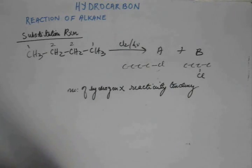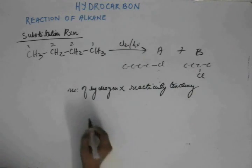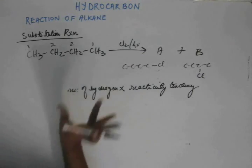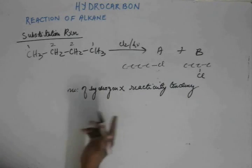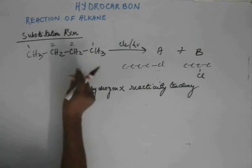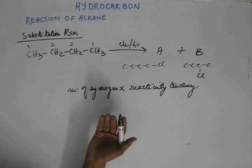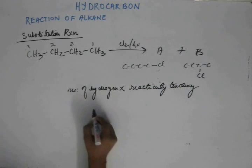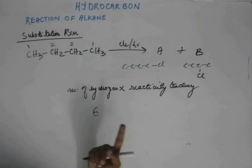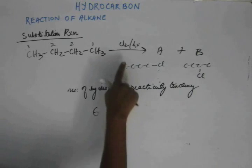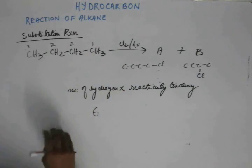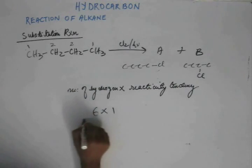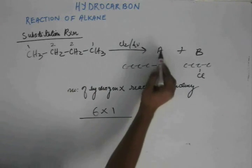And in order to find the ratio of A and B, let's divide the number of hydrogen and the reactivity tendency product for both sites. If I am going to write the product for site number one, the site number one has six hydrogen because there are two sites like site number one and three on each site. And the reactivity tendency, since it is chlorine, for one degree you have tendency as one. So this will be for product A.